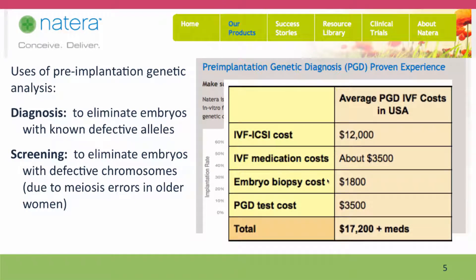One downside is it adds extra cost to what's already a very expensive procedure. There are the costs typically associated with in vitro fertilization, plus the cost of medications the patient pays herself, and then an additional cost of $3,500 for the pre-implantation genetic diagnosis. For a woman older than 35, the benefit of the improved chance of success more than outweighs the extra cost of the test.